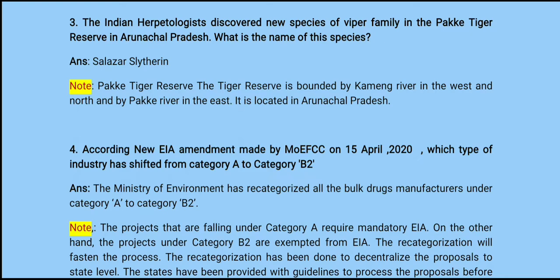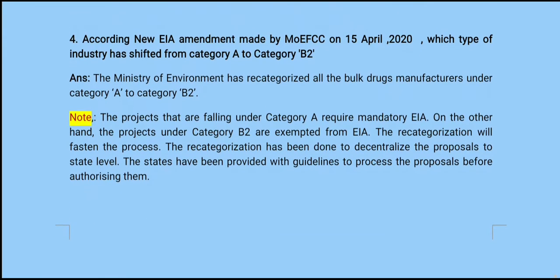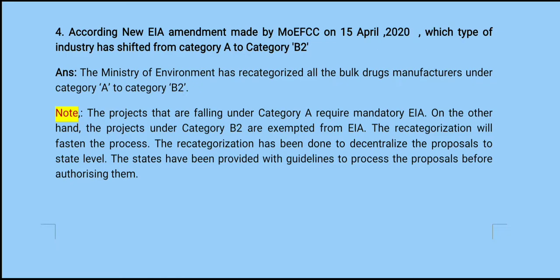The last question, question number four: according to the new EIA amendment made by the Ministry of Environment, Forest and Climate Change (MoEFCC) on 15th April 2020, which type of industry has been shifted from Category A to Category B2? The answer is: the Ministry of Environment has recategorized all bulk drug manufacturers from Category A to Category B2.